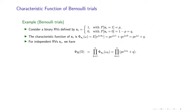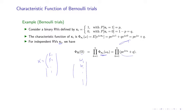Now, for the joint characteristic function of these binary variables, you set x equal to the vector (x_1, x_2, ...). Because they are independent, the joint characteristic function becomes a product of the individual characteristic functions. Remembering that omega is (omega_1, omega_2, ...), this becomes the product over all i of the individual characteristic functions evaluated at omega_i. This is the joint characteristic function of the binary sequence.